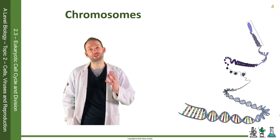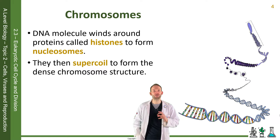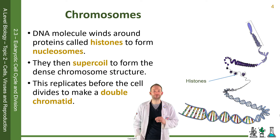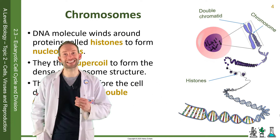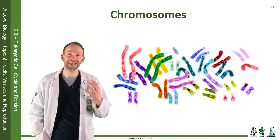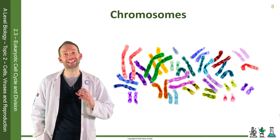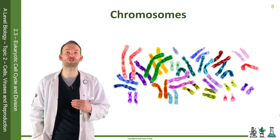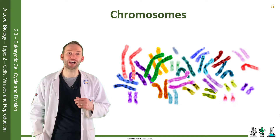To form a chromosome, the DNA molecule winds around proteins called histones to form nucleosomes. They then super-coil to form the dense chromosome structure. This replicates before the cell divides to make a double-stranded chromatid. When the chromosomes are fully condensed, they can be stained and actually seen in a cell. In a typical human cell there are 46, but each species has a different chromosome number. A karyotype is a photograph of all the chromosomes in a cell.